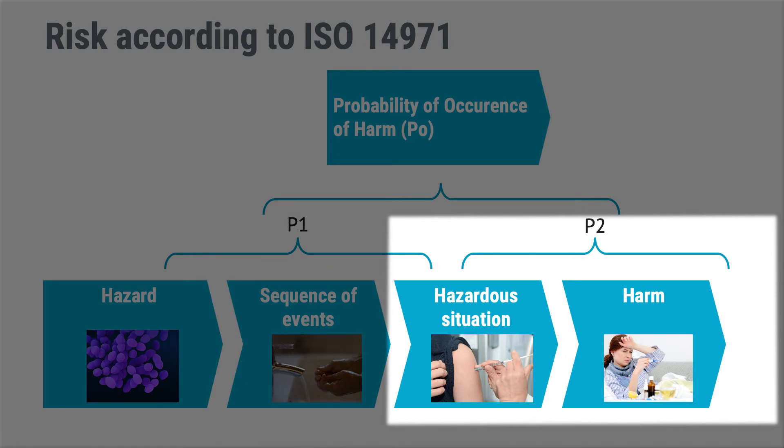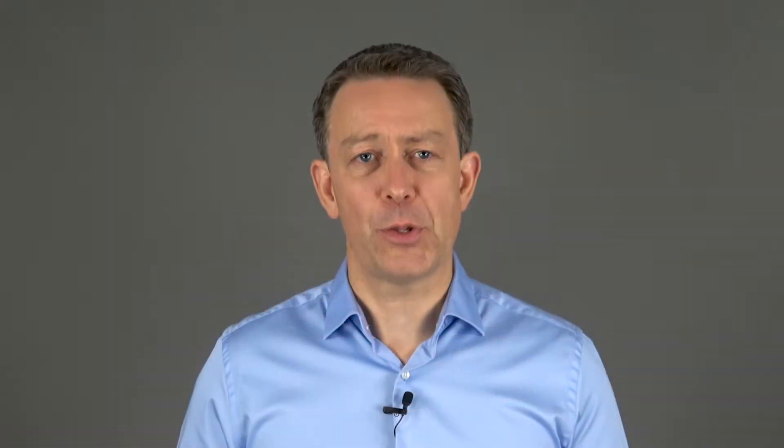During your software risk management work, you might find a situation where you would like to add risk control measures to reduce the likelihood of harm occurring, and that is P2. Such a risk control measure is likely to be outside of the software and should preferably be documented in your system risk analysis. The mindset when starting with software risk management is to assume that software failure always occurs. The reason for this is that it is very difficult and maybe even impossible to estimate the probability of a software failure.